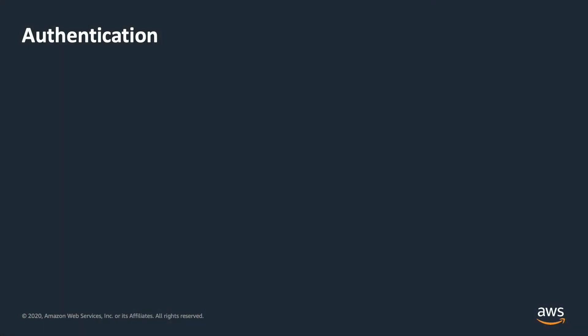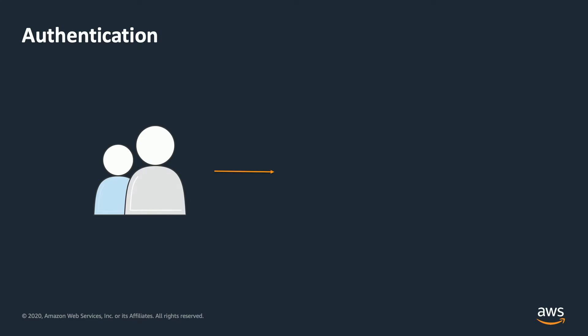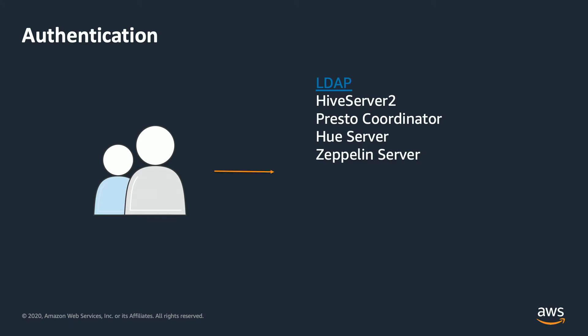Let's talk in more detail into those specific areas and see what applications and options our customers are using today. The first one is authentication. When it comes to authentication, different applications will have different features. For example, if you're looking to implement LDAP authentication, applications like Hive Server, your Presto coordinator, Hue, and Zeppelin all offer the ability to do that.